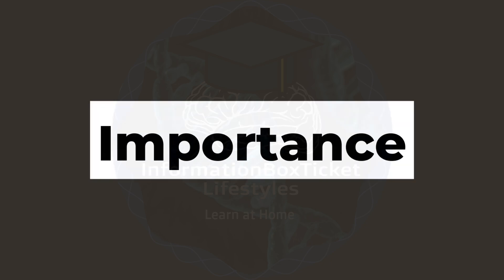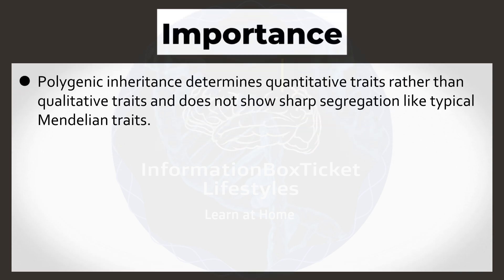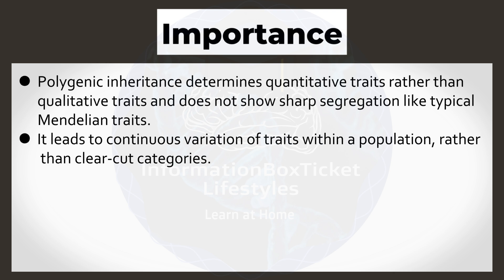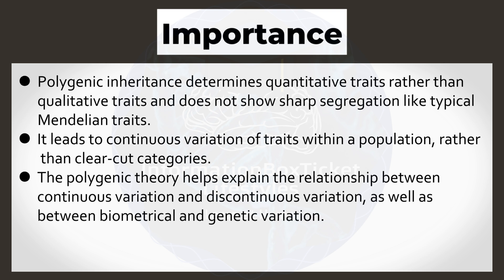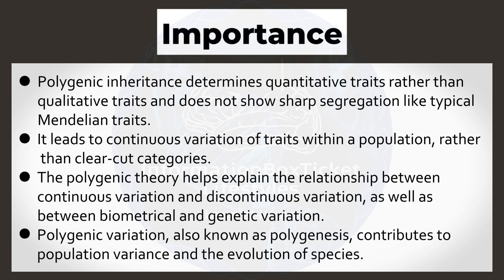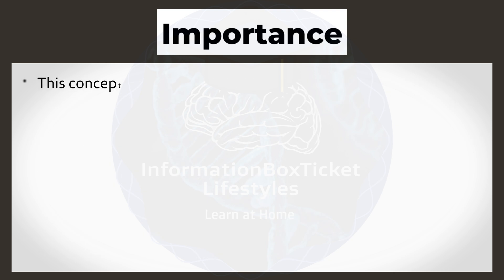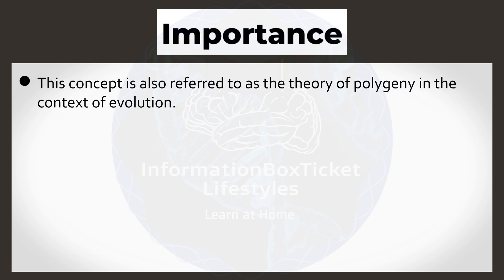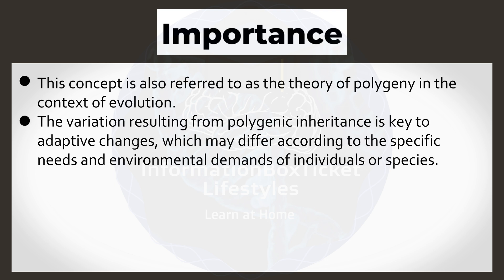Importance of Polygenic Inheritance: Polygenic inheritance determines quantitative traits rather than qualitative traits, and does not show sharp segregation like typical Mendelian traits. It leads to continuous variation of traits within a population rather than clear-cut categories. The polygenic theory helps explain the relationship between continuous variation and discontinuous variation, as well as between biometrical and genetic variation. Polygenic variation, also known as polygenesis, contributes to population variance and the evolution of species. This concept is also referred to as the theory of polygeny in the context of evolution. The variation resulting from polygenic inheritance is key to adaptive changes, which may differ according to the specific needs and environmental demands of individuals or species.